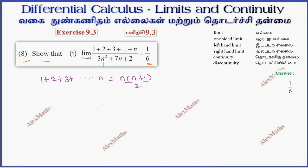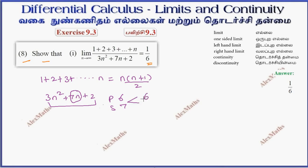Now factorize the denominator: 3n² plus 7n plus 2. Product is 1×3×2 = 6, sum is 7. Using middle-term split: 3n² plus 6n plus n plus 2.